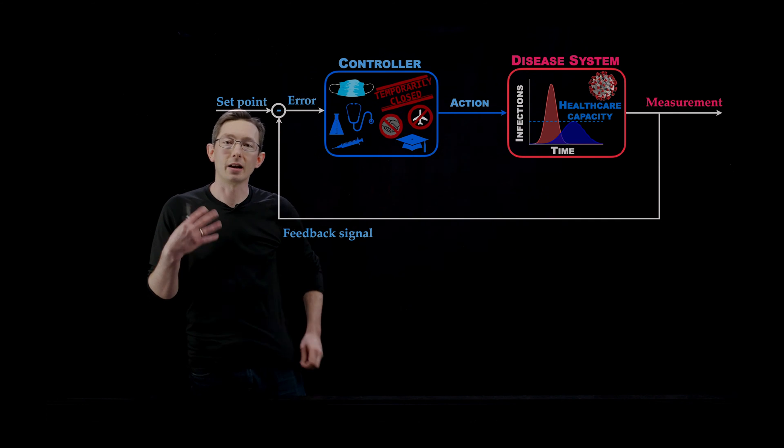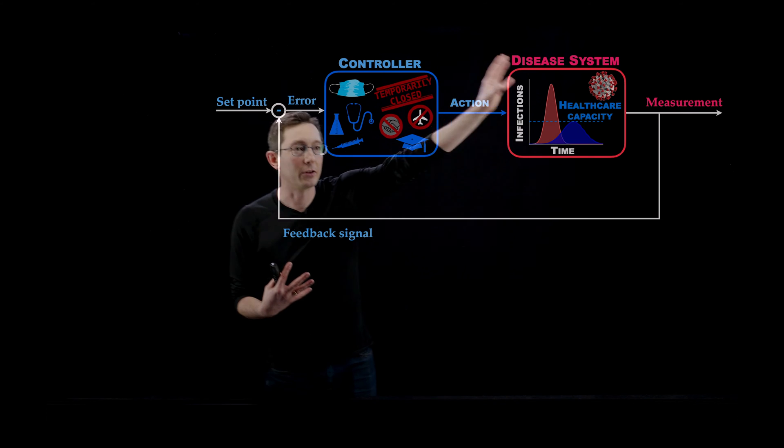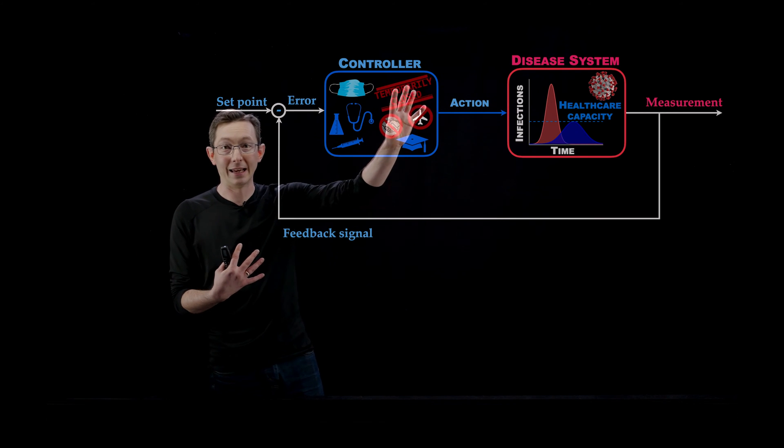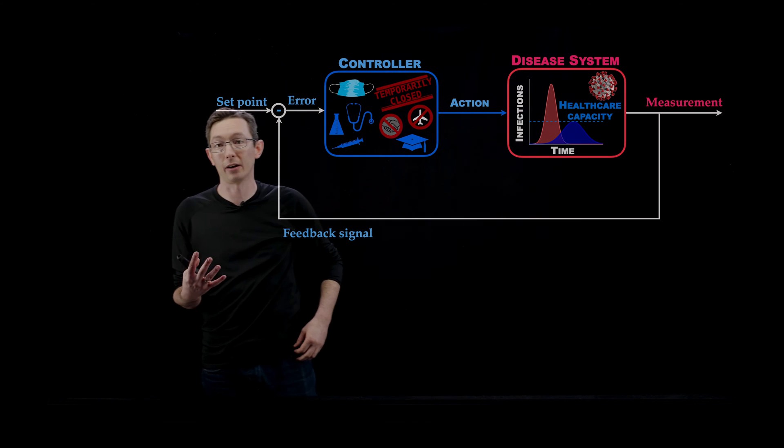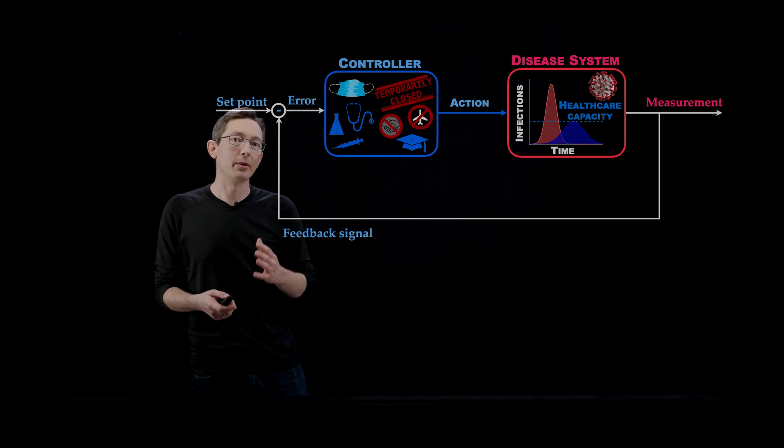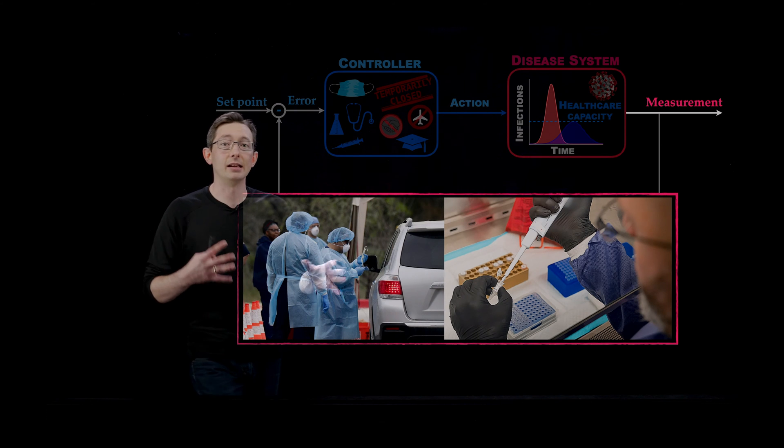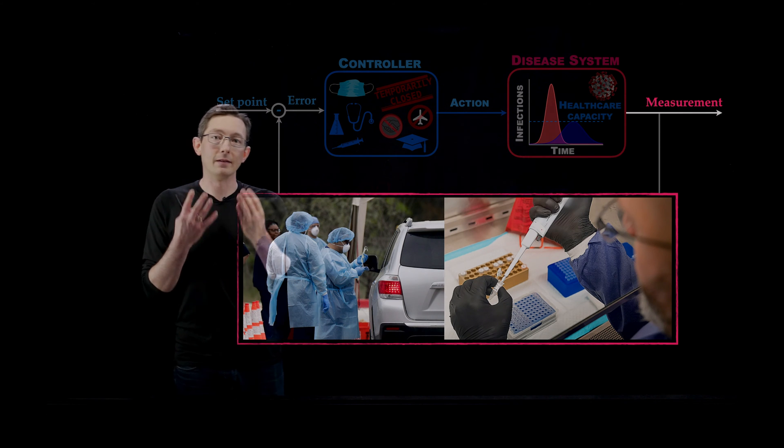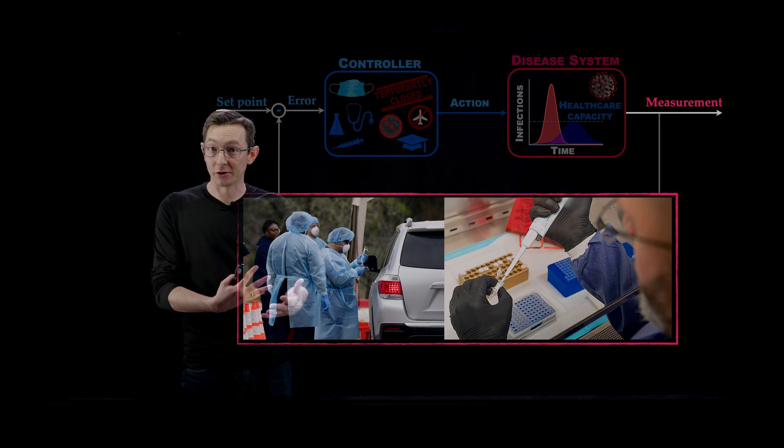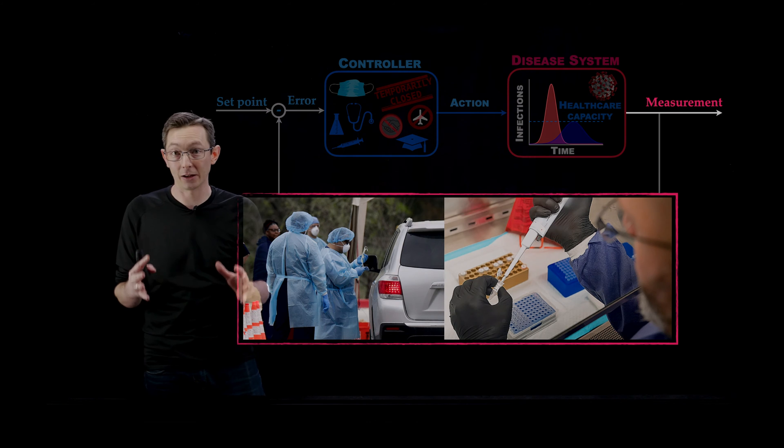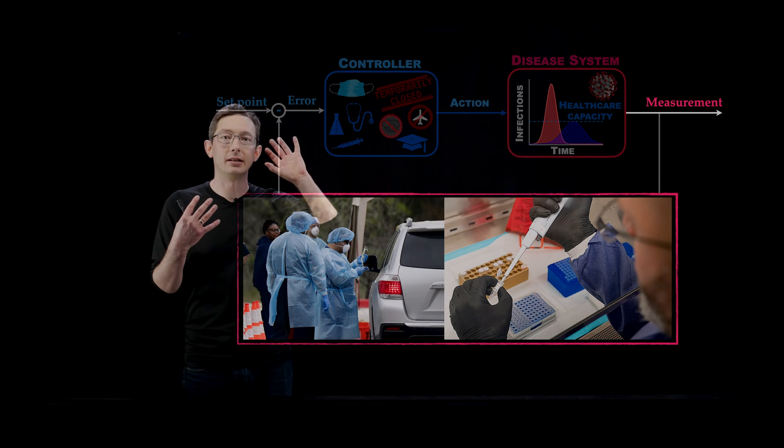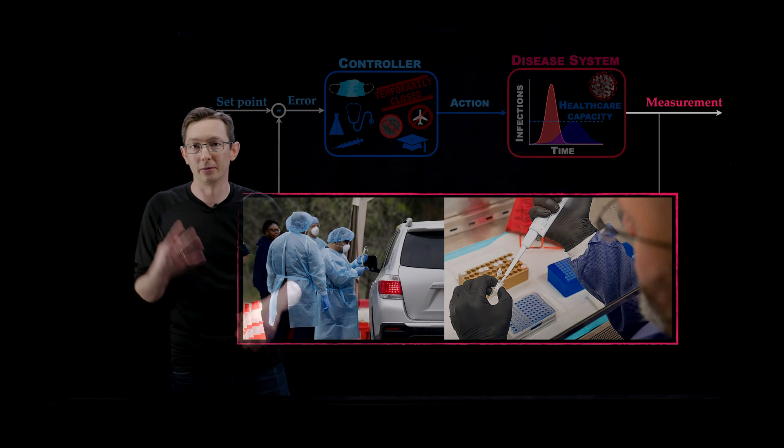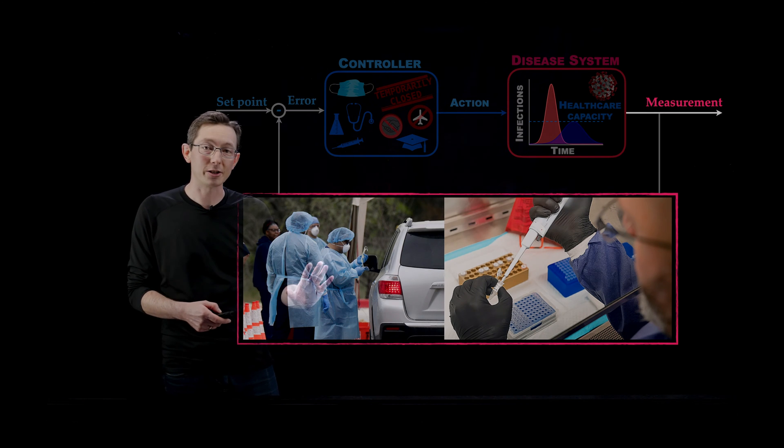In the last few lectures we've talked about this overarching control diagram - how we have our disease system, this unstable spread of disease as it goes through a population, and our efforts to take actions to control this spread, in this case to bring it below the healthcare capacity. In this lecture I'm going to point out the importance of measurements in this system. This large feedback control diagram is predicated on the availability of accurate, fast measurements. Sensor measurements are the lifeblood of feedback control and are what allow us to achieve the high performance and robustness that control systems are able to attain even in unstable systems.